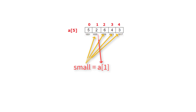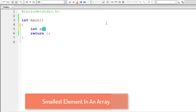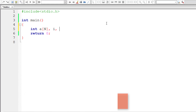By the end of traversing this array, the variable `small` will have the smallest element of that array. We will also copy the position — the index where the smallest element is present — to a variable to display its position. We'll define N as a macro.